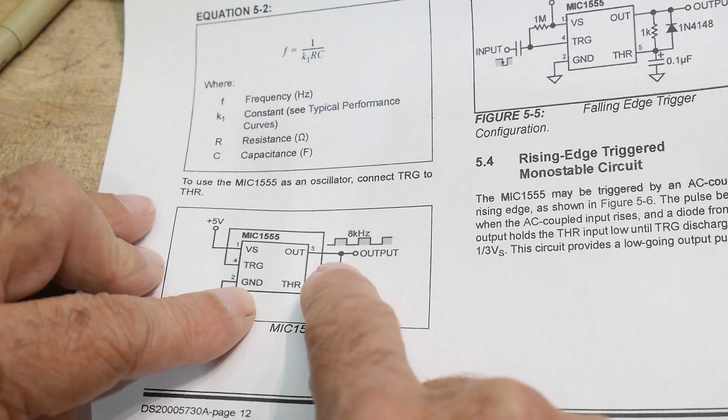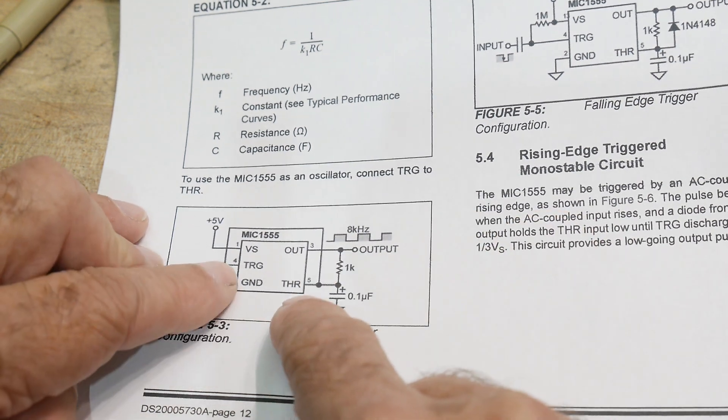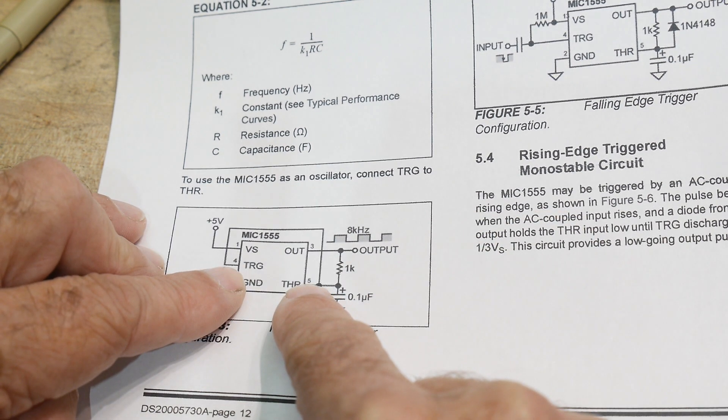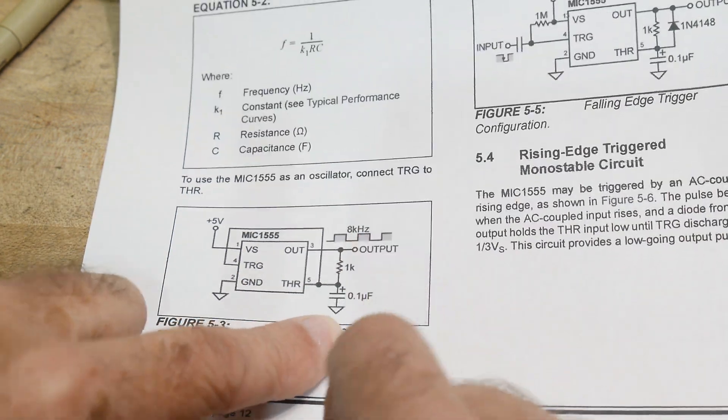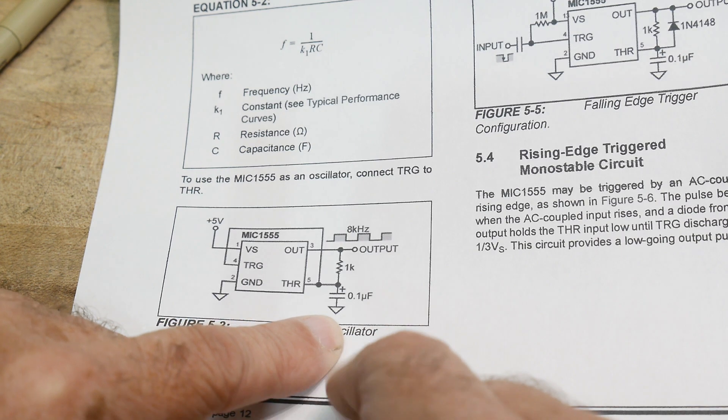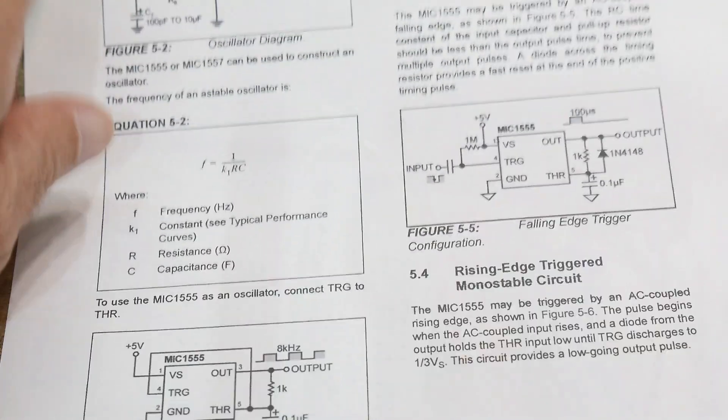The output is on pin three. And then threshold and trigger are tied together. And there's an RC time constant. So you just have to add an R and a C and it goes. So there you go. So let's take a look at it.